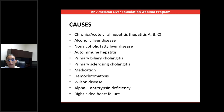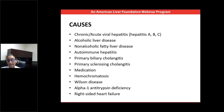Autoimmune liver diseases, including autoimmune hepatitis, primary biliary cholangitis, and primary sclerosing cholangitis. These are all autoimmune conditions where the body produces antibodies to fight against the liver, leading to inflammation and damage of the liver tissue. Many prescribed and non-prescribed medicines or drugs can also lead to inflammation and liver disease.